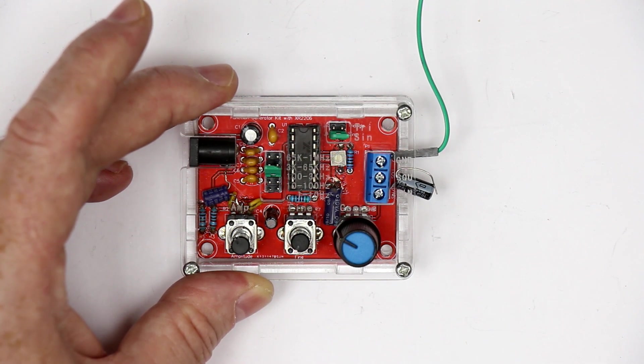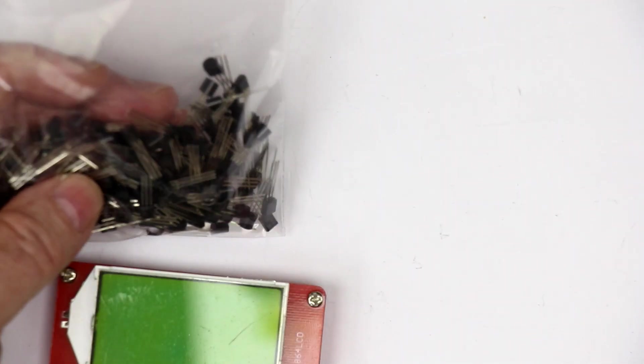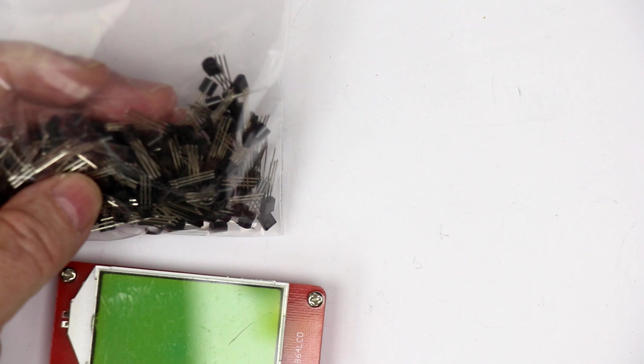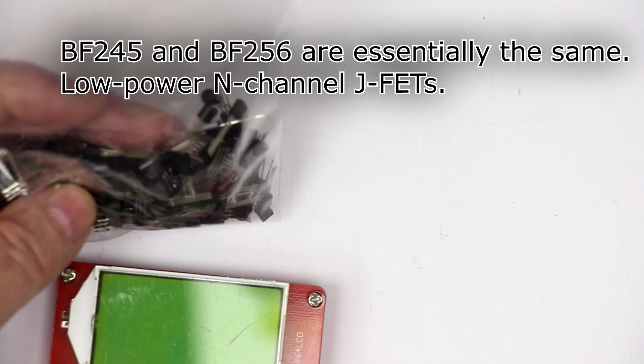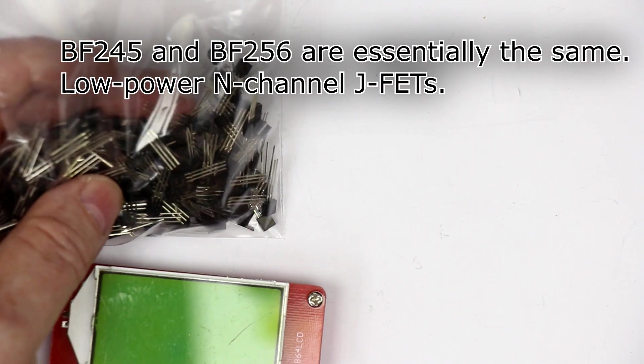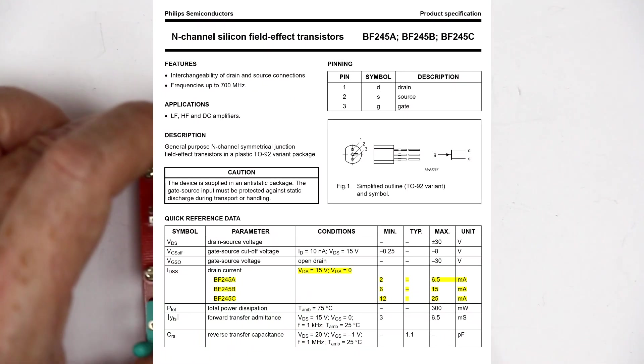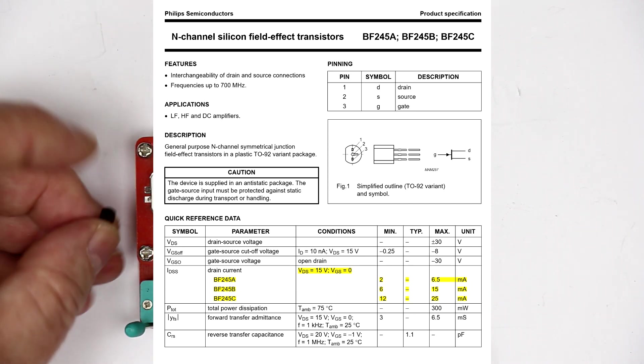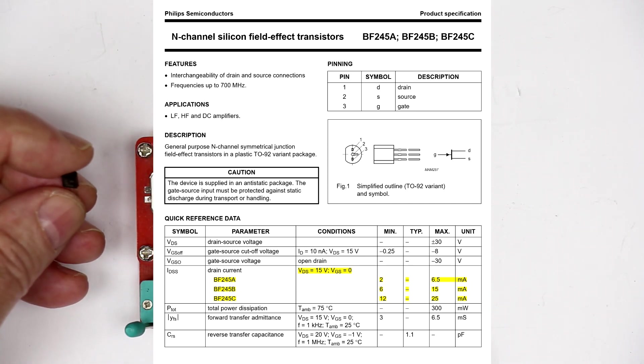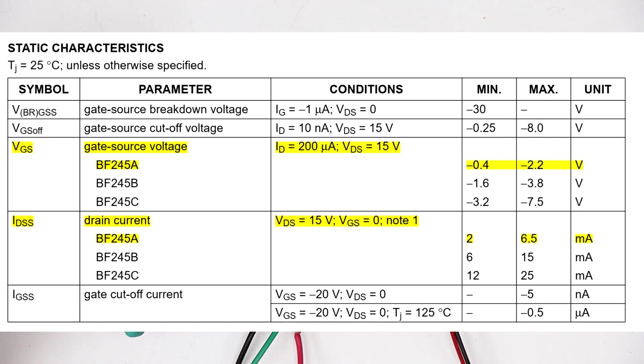The next thing I encountered was a batch of BF256A or BF245A. These are n-channel JFETs and they are quite popular because they have a very low gate threshold voltage.